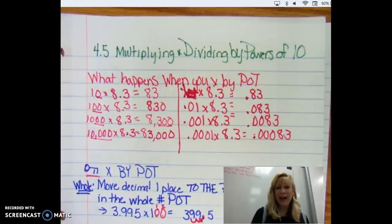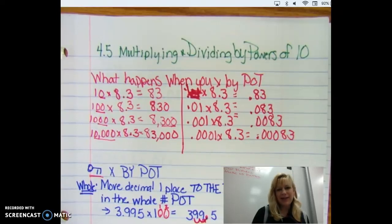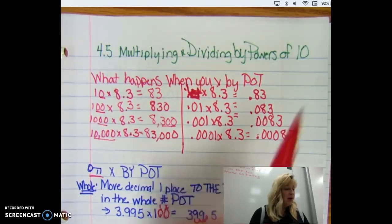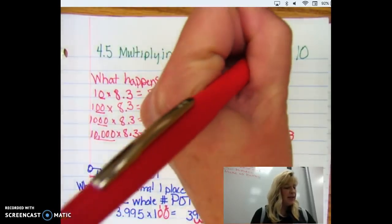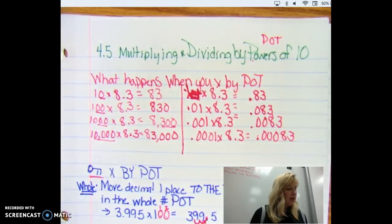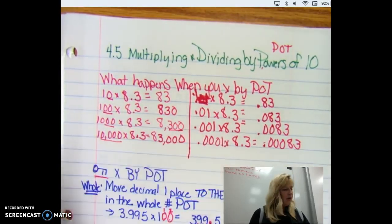Hi everybody and welcome to what I like to call the dance of the decimals. Today we are going to make the decimals simply dance around. We are not going to be doing a lot of arithmetic or calculation with them, but we're going to notice some patterns when we work with powers of 10, and I like to do POT to abbreviate that. So what happens when you multiply by a power of 10? Many of you already know this.